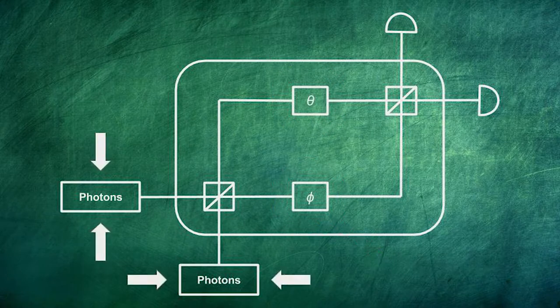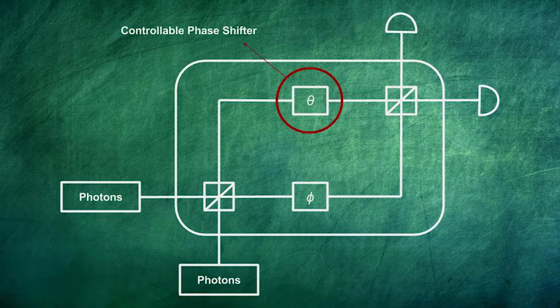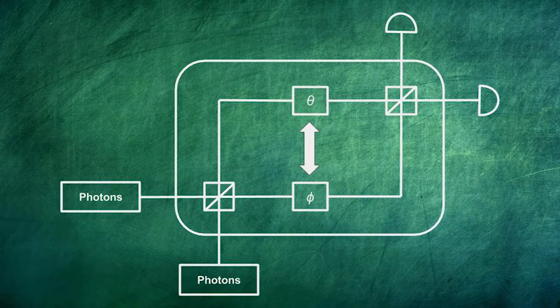To do so, we inject a set of entangled photons, preparing a known state into the interferometer, and measure their outcome path, which can either be through this exit port or through this other one. After each photon, we readjust the value of theta and send a new photon into the device. We keep repeating this procedure until our phase shifter theta can accurately predict the outcome of every photon. At this point, we can say that the value of theta is a good estimator of the value of the unknown phase shifter phi.